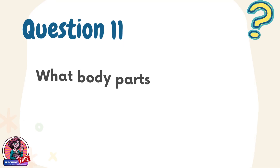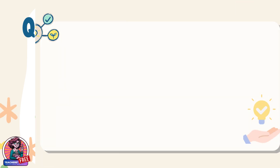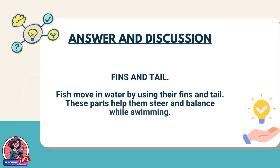Question 11. What body parts do fish use to swim? Answer: Fins and tail. Fish move in water by using their fins and tail. These parts help them steer and balance while swimming.